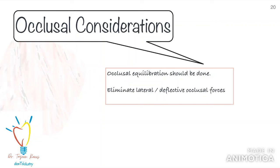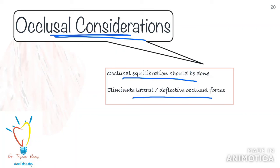Another important tooth-related factor is root configuration. When dealing with teeth having a curved canal, a straight post can extend to the start of the canal curvature. Some complications can also arise in curved canals, such as straightening or stripping of the curved canal, perforation or weakening of the root canal wall, or loss of apical seal. One more very important factor to consider is occlusion. Make sure proper occlusal equilibration is done after the tooth is restored completely with a crown, because any lateral forces generated on the crown may lead to fracture of the tooth or debonding of the post.